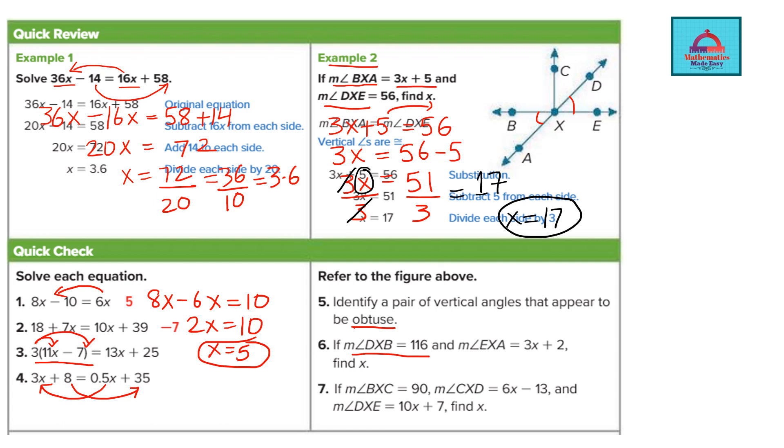So d starts from d moves to x till b. This whole angle is given how much? 116 degrees. And measure of EXA.